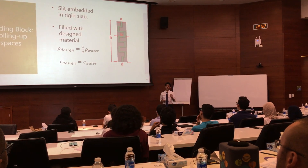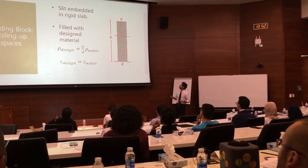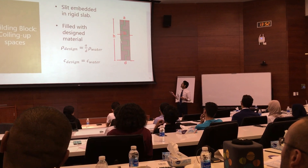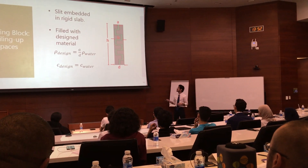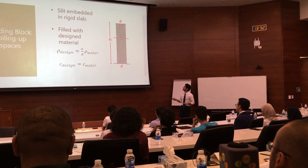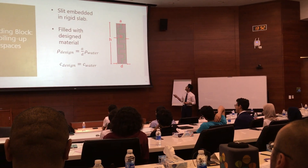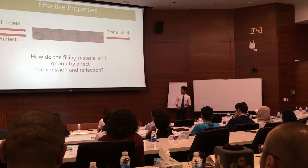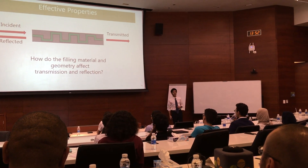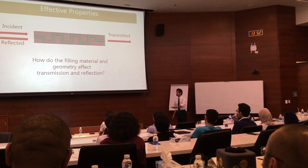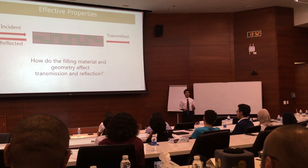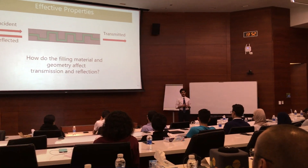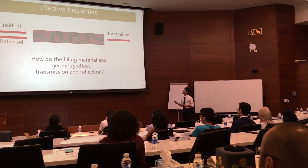The building block, or the unit of our lens, is going to be called the Coining Up Space. It's a slab with a slit embedded inside the slab. The slit is filled with a design material, and we choose the values for the density and the sound speed to be as such — it can be evaluated from the schematic here. When analyzing the Coining Up Space, we ask ourselves how the parameters of the design material and the geometry of the lens affect the overall transmission and reflection, or the aggregate properties of the Coining Up Space.